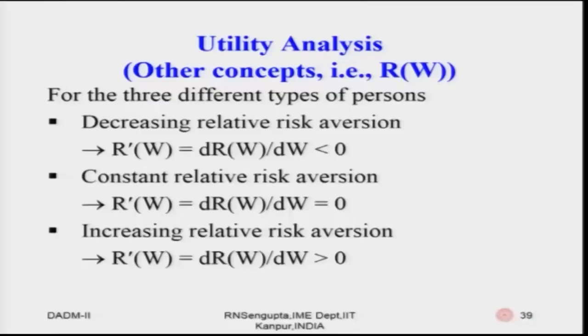In similar fashion, following the same logic as we did for A: decreasing relative risk aversion property means R prime — D of R(W) by dW — is less than zero; constant relative risk aversion means R prime equals zero; and increasing relative risk aversion means R prime is greater than zero.